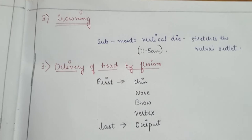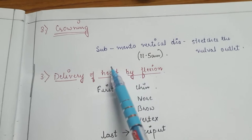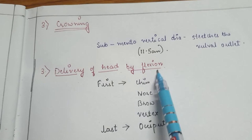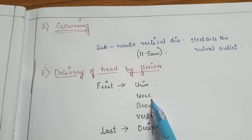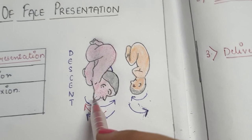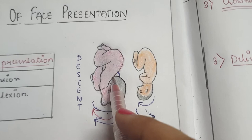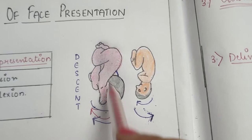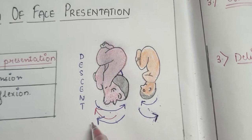After crowning, the next step is delivery of the head by flexion. When the submentovertical diameter stretches the vulval outlet, the chin is born first, then the nose, then the brow, then vertex, and finally the occiput. Delivery of the head occurs by flexion, meaning the distance between the chin and chest is decreasing — which is opposite to normal delivery.